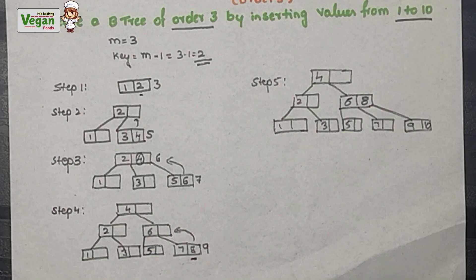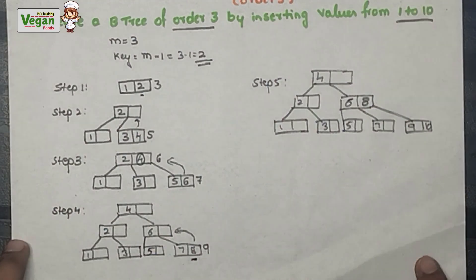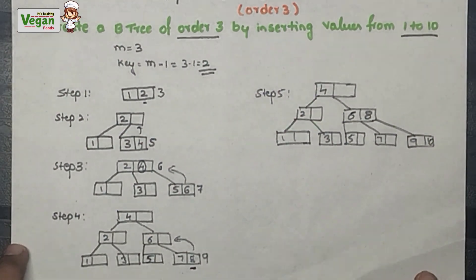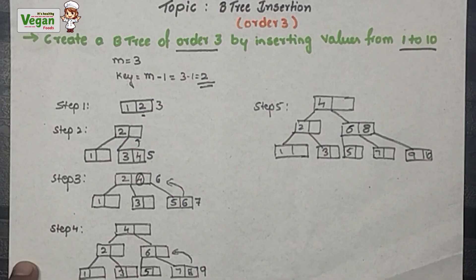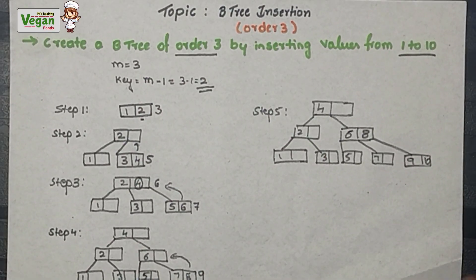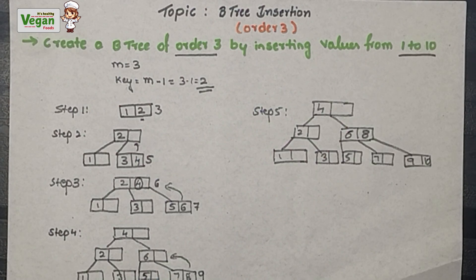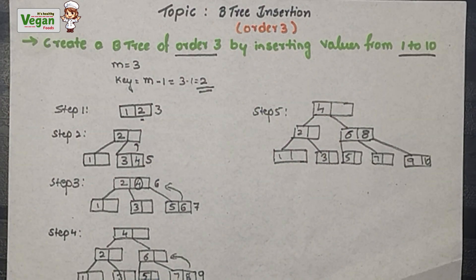Now we have constructed the B-tree of order 3 from values 1 to 10. Hope you understood the concept of B-tree insertion. If you have any doubt please comment below, and if you liked the video please subscribe for more engineering related topics. Thank you.